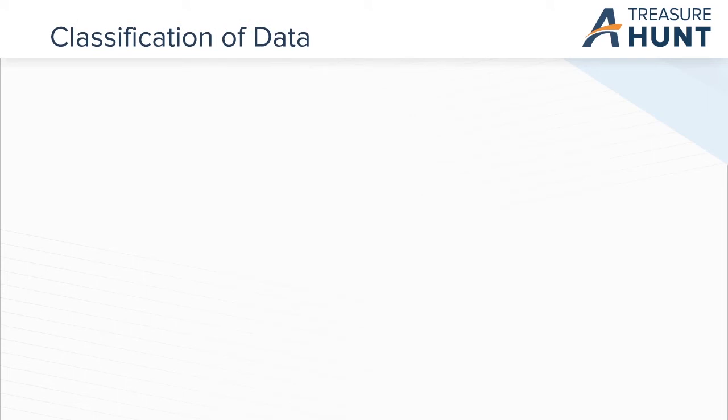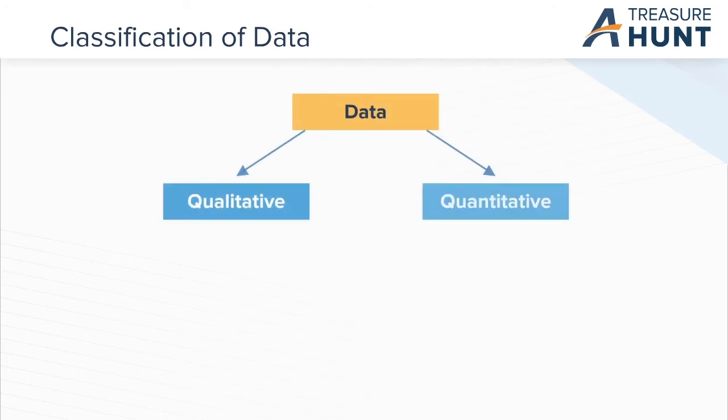Data is all around us and it is the most important new natural resource. Data can be broadly classified into two categories, that is, qualitative and quantitative.